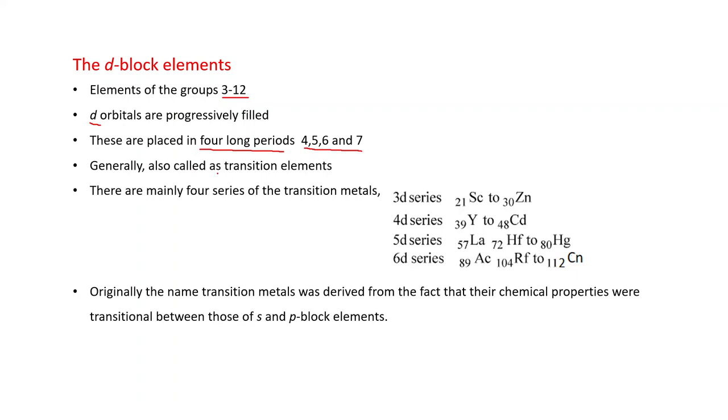These periods are 4, 5, 6, and 7. Generally they are also called transition elements and there are mainly four series of the transition metals. 3D series starting from scandium atomic number 21 to zinc atomic number 30. 4D series yttrium atomic number 39 to cadmium atomic number 48.